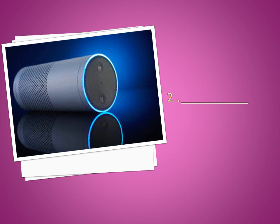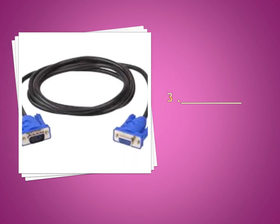Number 2 — we said we have internal and external. That is one of the external outputs. If you want to listen to something, the sound comes through that gadget. You write the name. Number 3, we said for you to make your desktop work, you have to connect it with that gadget. How do you call that gadget? You write the name.